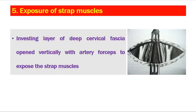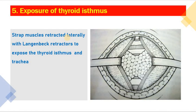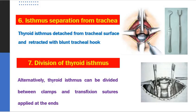The key principle during tracheostomy surgery is to never leave the midline and to palpate the trachea at every step. The investing layer of deep cervical fascia is opened vertically with artery forceps to expose the strap muscles. The strap muscles are then retracted laterally with Langenbeck retractors to expose the thyroid isthmus and the trachea. Once the thyroid isthmus is exposed, the trachea can be seen deeper to it. The isthmus is then separated from the trachea — either by retracting it upward with a blunt tracheal hook, or by dividing it between clamps with transfixion sutures applied at the ends.